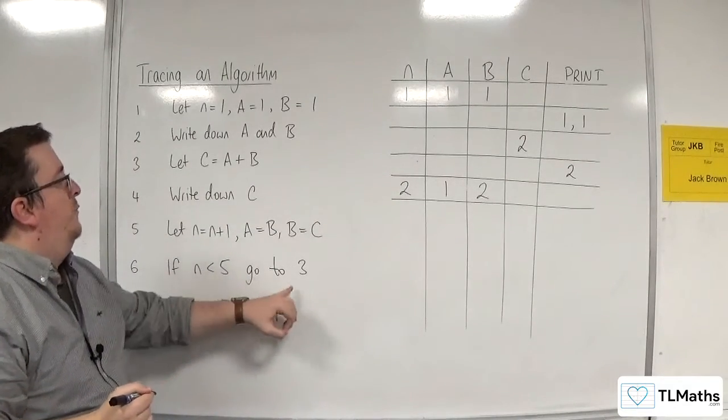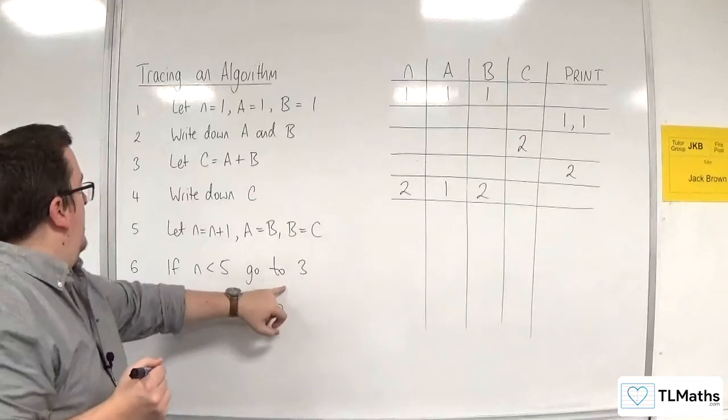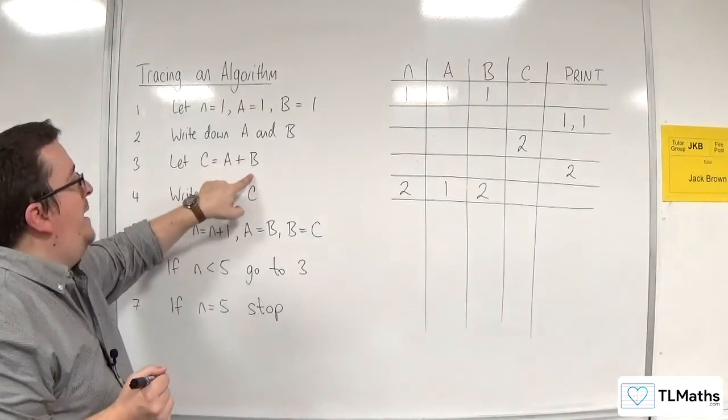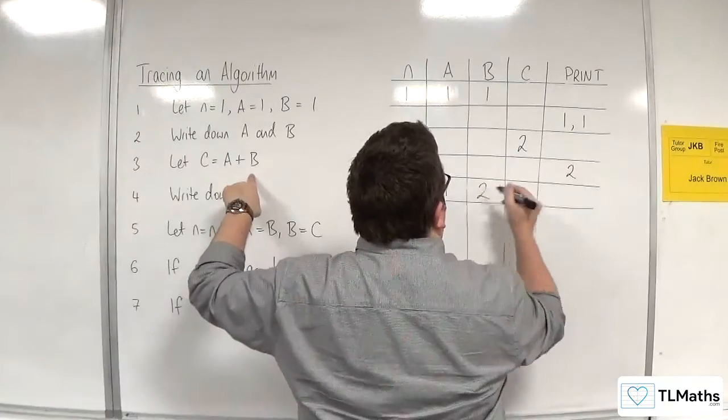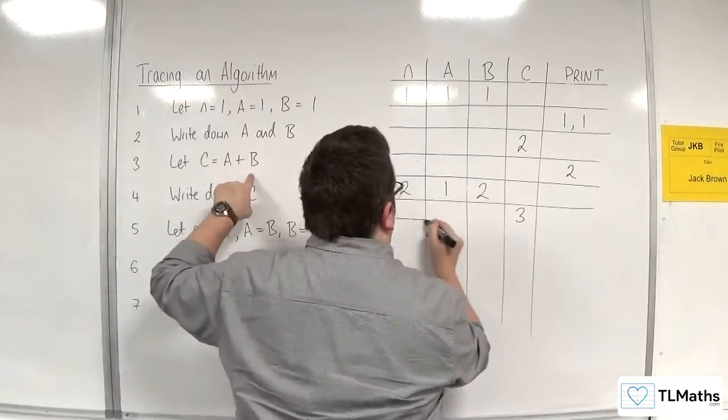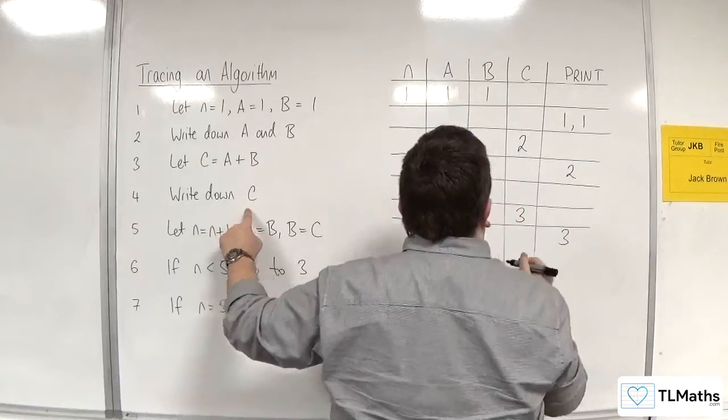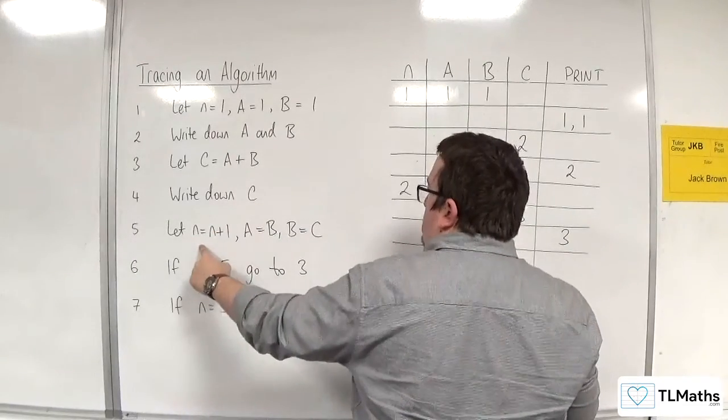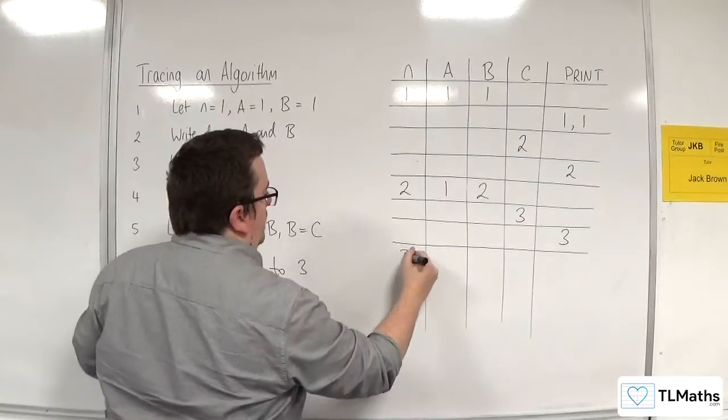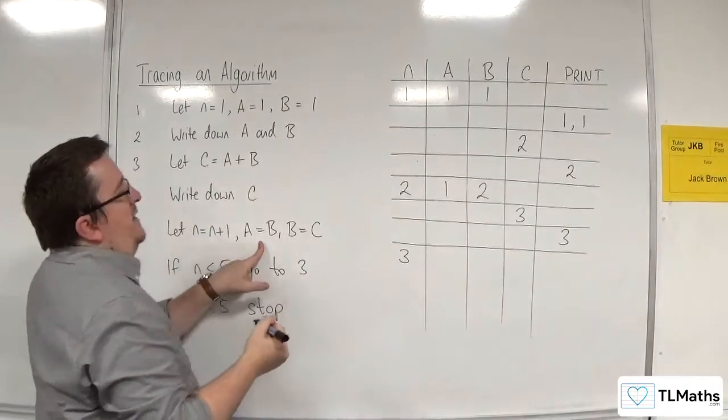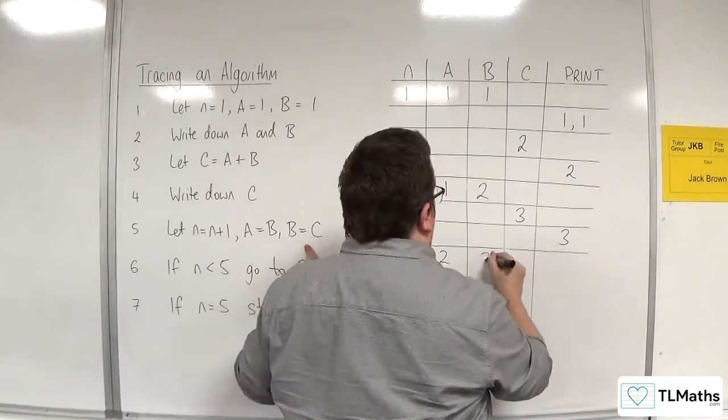All right, if N is less than five, we go to step three, which it is. So, we're going back to step three. Let C be equal to A plus B. So, C is equal to A plus B. One plus two is three. Draw a line. Write down C. Let N be equal to N plus one, so two plus one is three. A is equal to B, so two. And B is equal to C, so three.